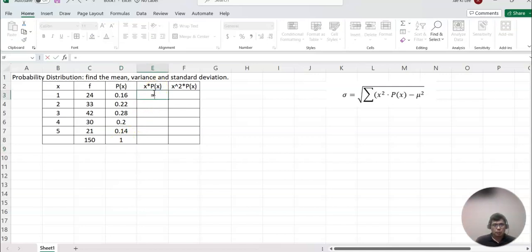Now, x times P(x). That equals each x times P(x). Go back and copy down. Now x squared times P(x).